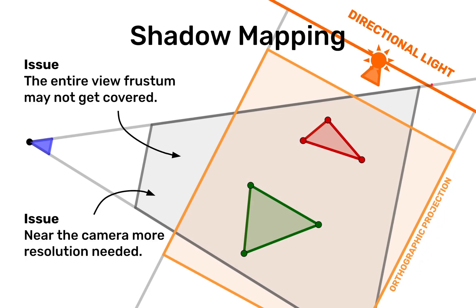Of course there are some issues with shadow mapping. And two most obvious one from this diagram are that the entire view frustum may not get covered. Right now we have this orthographic projection and you can see that it is not covering the entire view frustum. So you should create such a big shadow map that it covers the view frustum.